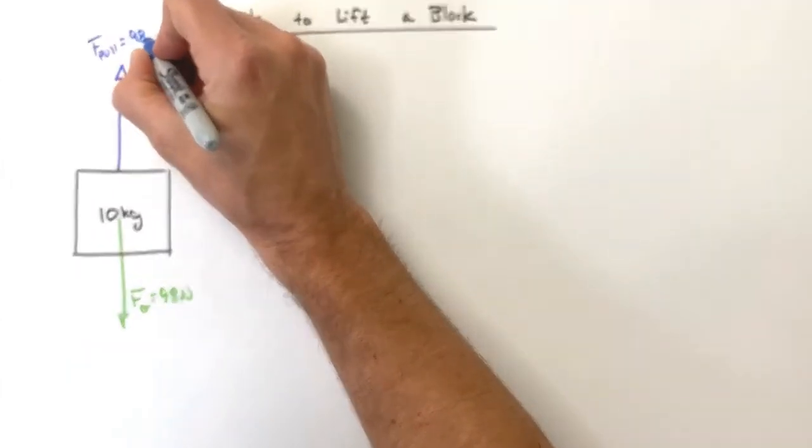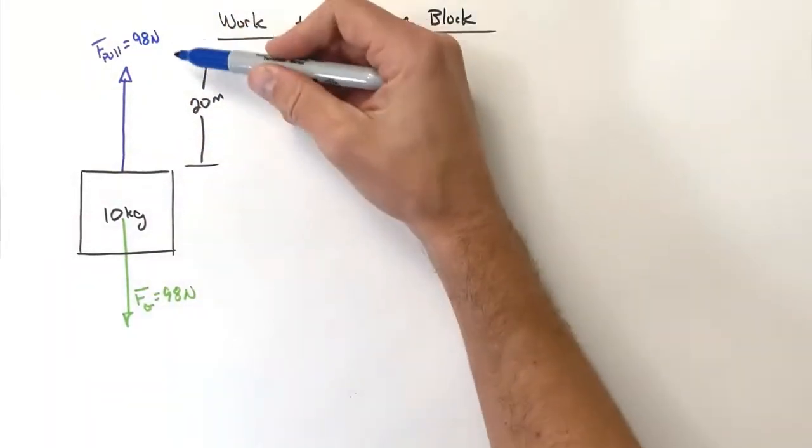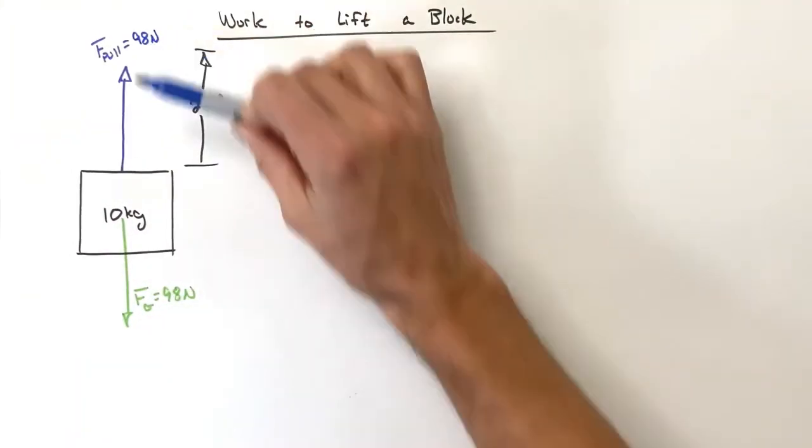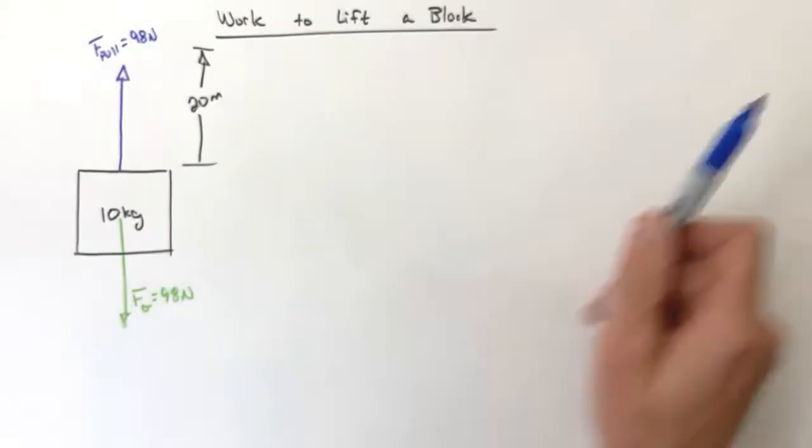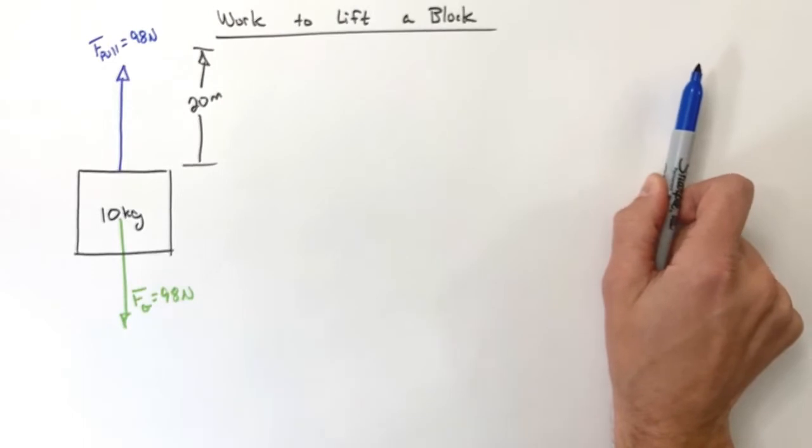Ultimately, if the pull force upward equals the force downward, that means this block is not going to accelerate. If you want to see the mechanics and the math behind that, click up here and take a look at the elevator problem.